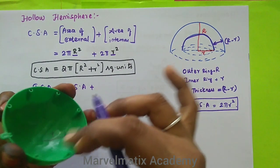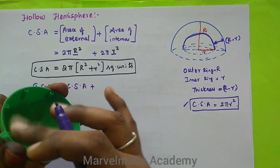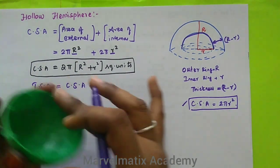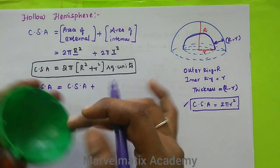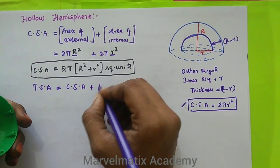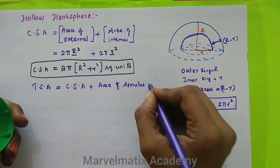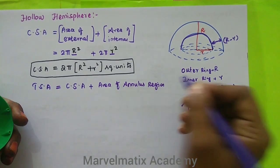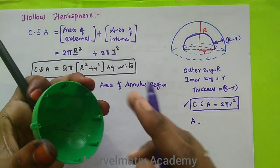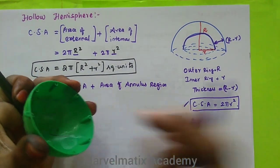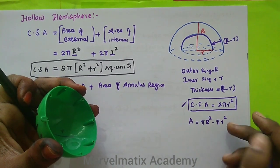The ring area — we analyse the ring region. The formula for the area of the ring is π(R² minus r²), so this is the ring area that we add to the CSA to get the TSA.